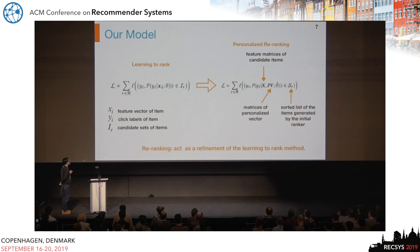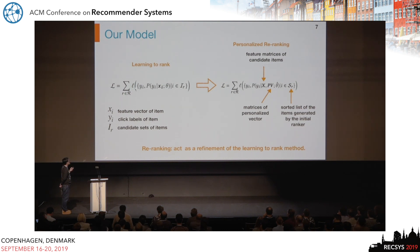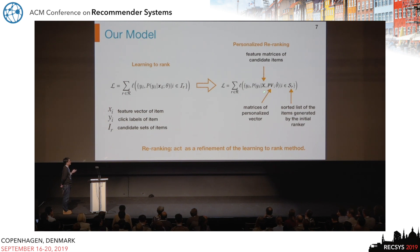To address these challenges, we propose a personalized re-ranking method. The existing learning to rank method uses feature vectors of items to predict click probabilities, and the model is trained to minimize the loss function between click labels and probabilities. For our re-ranking model, we use the sorted list generated by an initial ranker, consider mutual influences between items and user preferences, predict the conditional click probability of each item, and minimize the loss function. Re-ranking acts as a refinement of the learning to rank method.